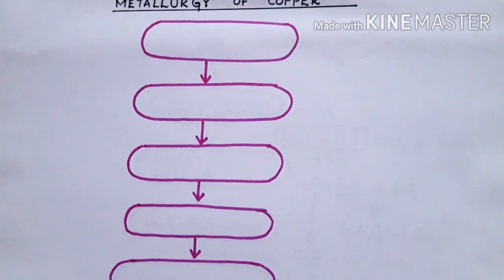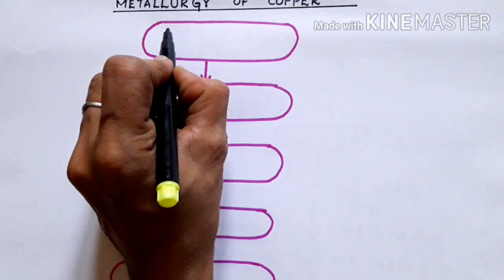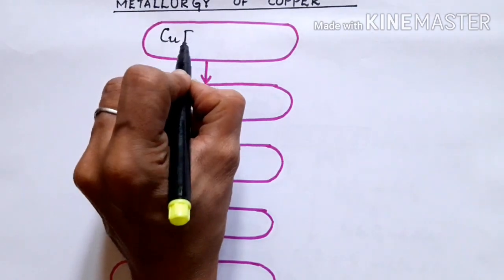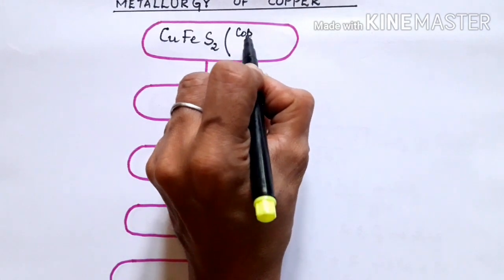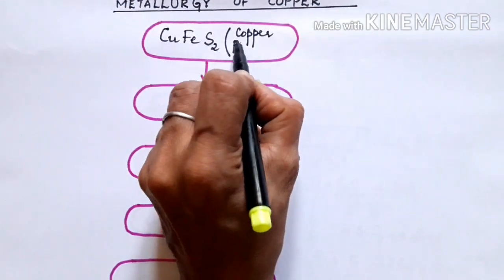Metallurgy of copper. Today we shall see the metallurgy of copper. Copper is extracted from copper pyrites. Copper pyrites has the formula CuFeS2.